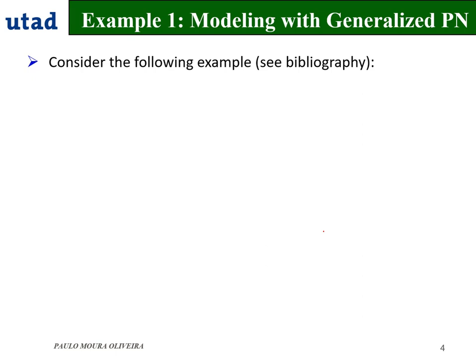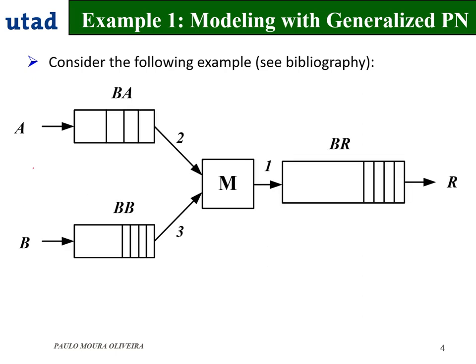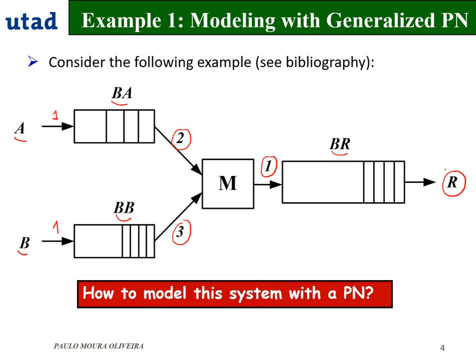Now we are going to consider one example which we will model with a generalized Petri Net. We got 2 parts: part A and part B. Parts A enter one by one to buffer A, and parts B enter one by one to buffer B. After that, there is a machine that will assemble two parts from buffer A with three parts from buffer B, resulting in product R, which is deposited in buffer BR — the output from this manufacturing system.